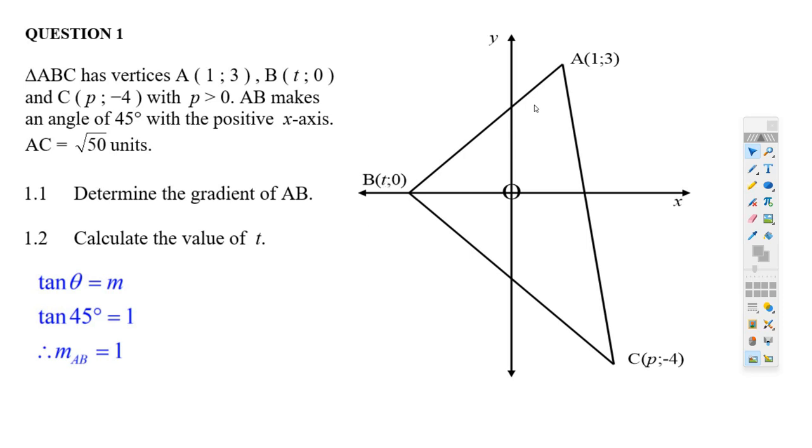Now we've got to figure out t. Well, if we find the gradient between A and B, we'd have (3 - 0) over (1 - t). Like that. And then all you do is multiply both sides by (1 - t). 3 minus 0 is 3. 1 times (1 - t). You see it cancels here, and there's your answer.